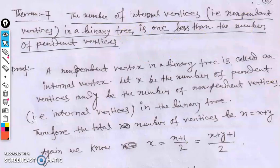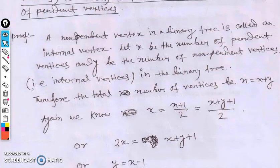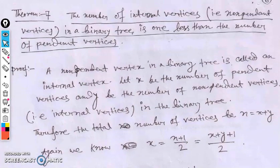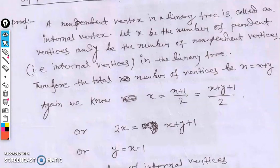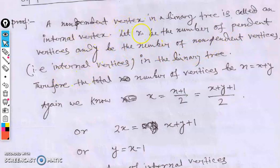Proof of the theorem: a non-pendant vertex in a binary tree is called an internal vertex. Let x be the number of pendant vertices and y be the number of non-pendant vertices. According to basic principles, if a graph has n vertices, then n equals the sum of pendant vertices plus non-pendant vertices.